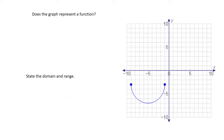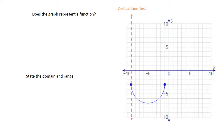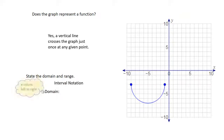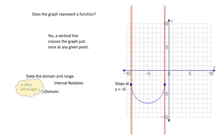We're going to look at one other curve — does it represent a function? With a vertical line passing all the way over, it only passes once, so we're going to say yes, that is a function. For the domain, thinking about x values from left to right, the left-most value of this graph is x = −9, and the right-most value is x = −1. So we're going to use brackets for −9 at the left-most and −1 at the right-most.